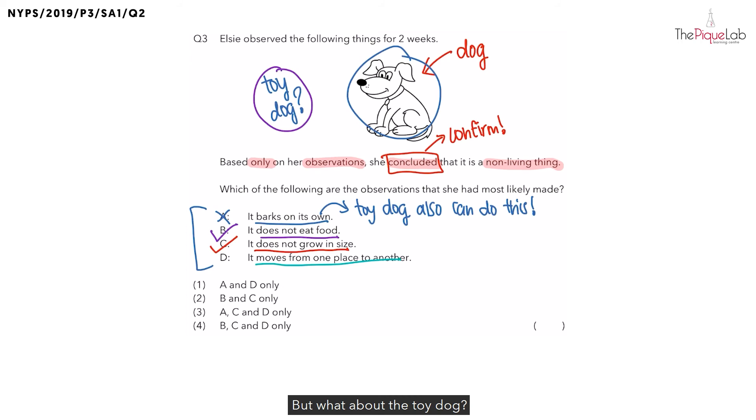But what about the toy dog? Is a toy dog able to move from one place to another? You would realize that there are some toy dogs, when you turn them on, they would be able to move from one place to another, right? So this last observation would not allow Elsie to confirm that this is a non-living thing because a toy dog would also be able to move from one place to another.